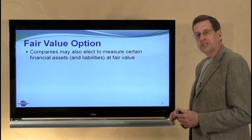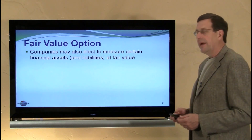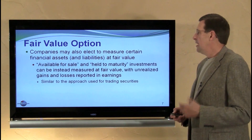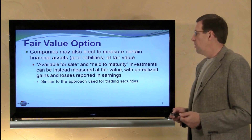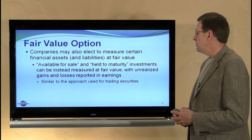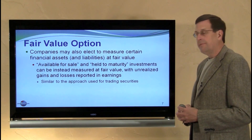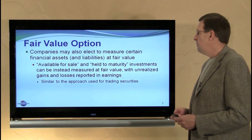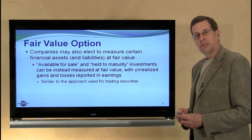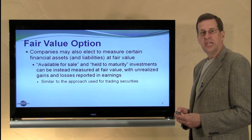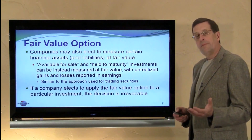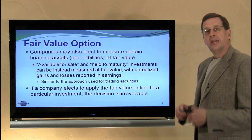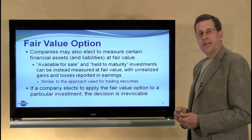Companies do have a fair value option that overrides this entire structure. Companies may elect to use fair value accounting for financial assets and financial liabilities — so this could be applicable to available-for-sale type securities and held-to-maturity investments. Any of those can instead be measured at fair value, and the gains and losses as they accrue would be recognized in earnings. This is very similar to the approach used for trading securities. If a company elects to apply the fair value option to a particular investment, that decision is irrevocable — you'll be using that method going forward from that date.